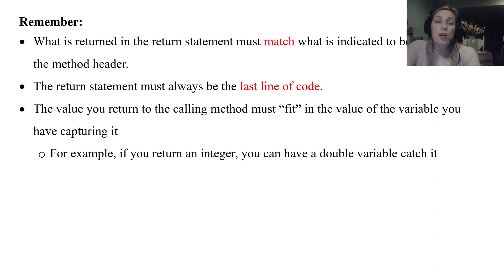The value you return must fit the value of the variable capturing it. Okay. So if you're returning an int, okay, you return an int. Your method signature says you return an int. And if you're capturing that return value, that value must also fit. Okay. Now if you return an int, you can have a double variable catch it. Right. Because an int fits into a double variable.